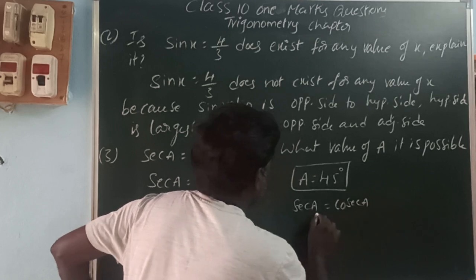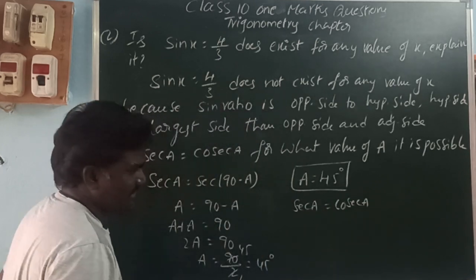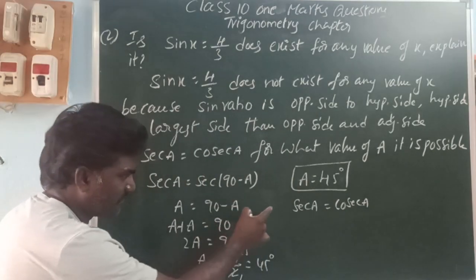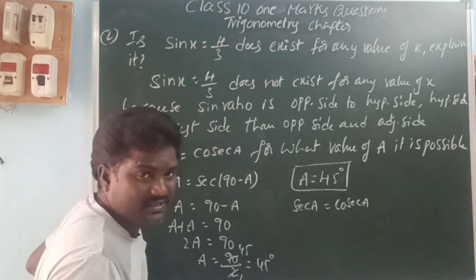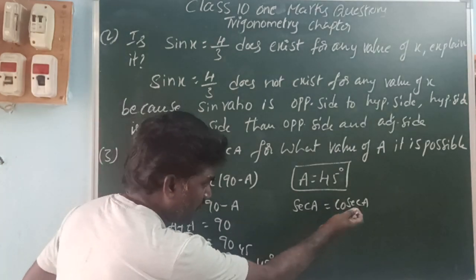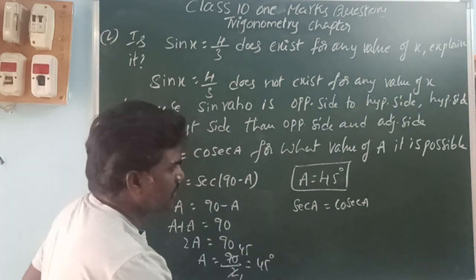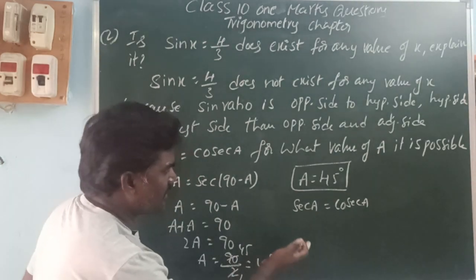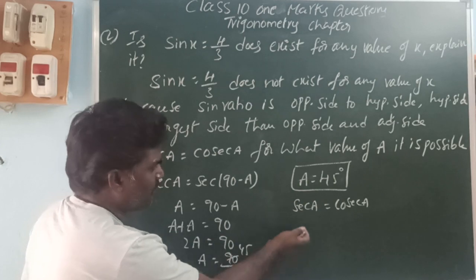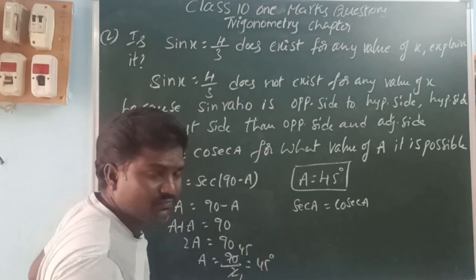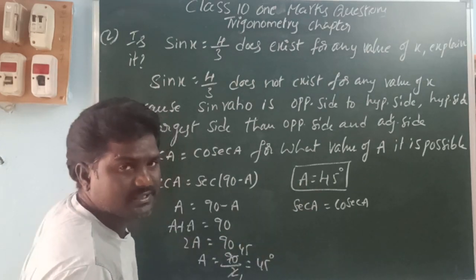At angle 45 degrees, sec A equals sec A. Putting 45 in place: sec 45 equals root 2 and sec 45 equals root 2. So for which angle these two are equal? At angle 45 degrees.